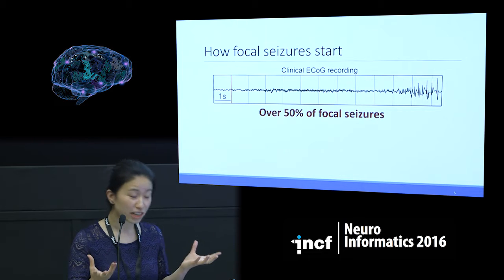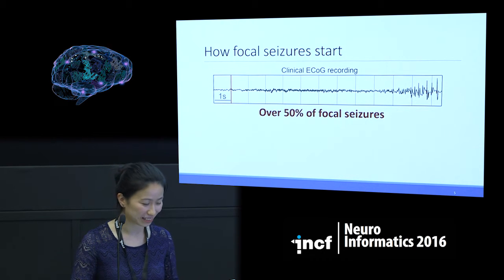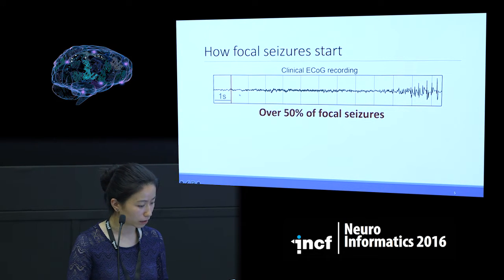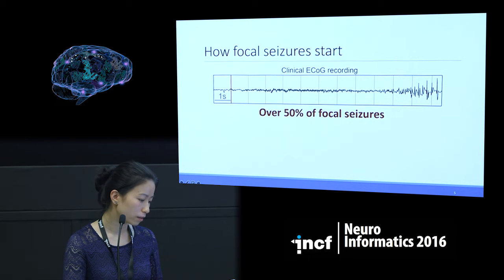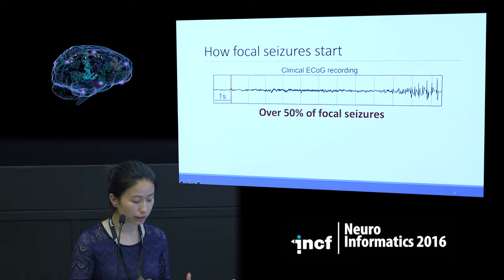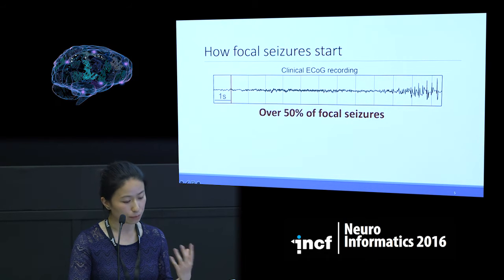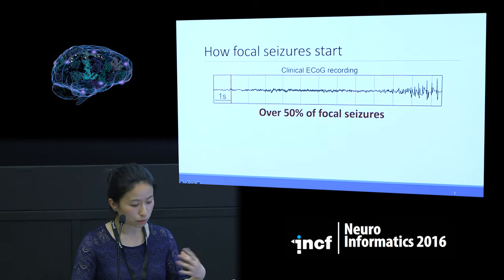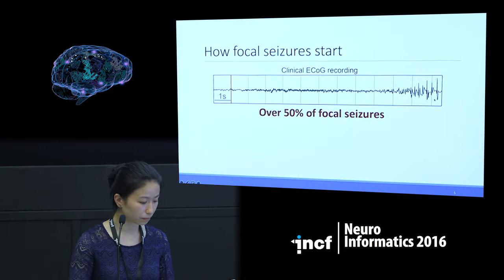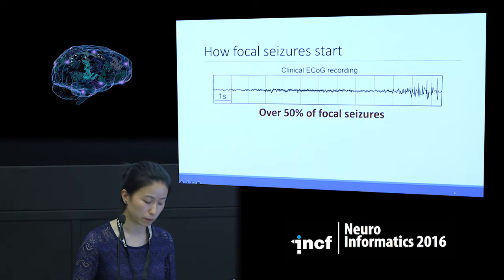The consensus — although it's a bit of a battle in the field — is that over 50% of seizures start in a particular way. There's a segment of normal background activity, and then you see slightly higher frequency oscillations that are fairly low in amplitude, building up some abnormal activity until it gets released into a higher amplitude oscillation, which you would definitely call epileptic spikes or epileptic spike waves. So this seizure starts with a low amplitude, fast oscillation.